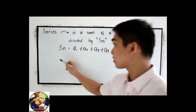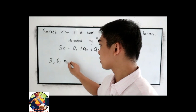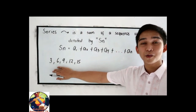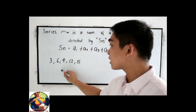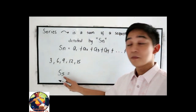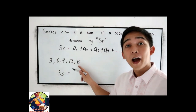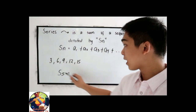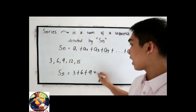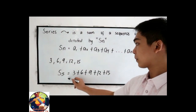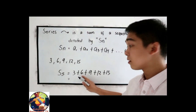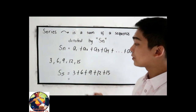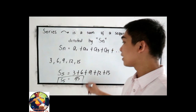Let's say we have the sequence 3, 6, 9, 12, 15. What would be the sum of our sequence? To get S5 — S5 because we have 5 terms — n is the number of terms you're going to sum up. That is 3 plus 6 plus 9 plus 12 plus 15. Adding these: 3+6=9, +9=18, +12=30, +15=45. So our S5 is 45.